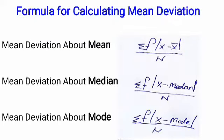For the calculation of mean deviation, we know that there are three averages used: mean, median, or mode. First, mean deviation about mean is equal to sigma f into |x minus x̄| divided by n. Here, x is the value given, x̄ is the arithmetic mean, f is the frequency of each x value, and n is the total number of items, which equals sigma f.